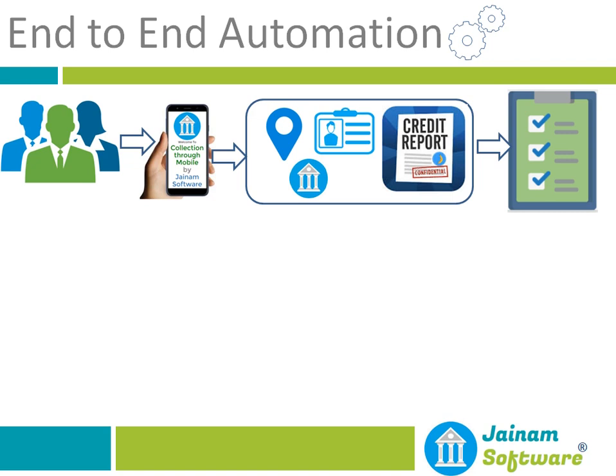In addition to this, we also do checks for what product scheme the customer should be eligible for and what the limit should be based on customer income and other factors. Based on these rules, the loan can be approved or rejected. We can also ask for additional information from the customer — an email or SMS will be sent, the customer logs in to the mobile app and provides further details. This process is fully automatic with no manual intervention needed.